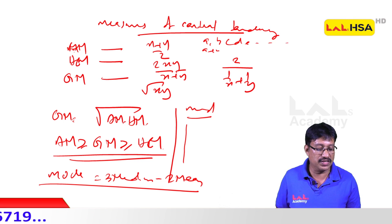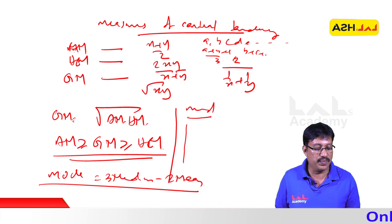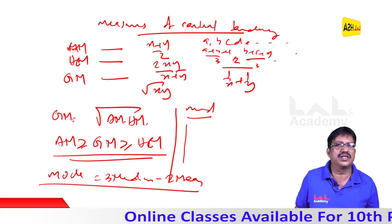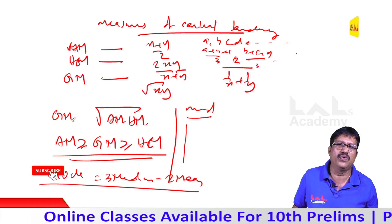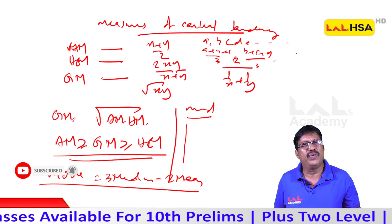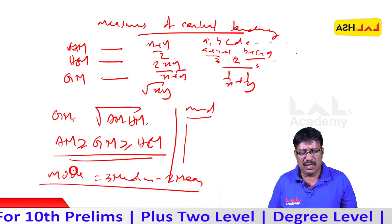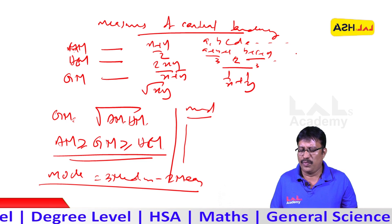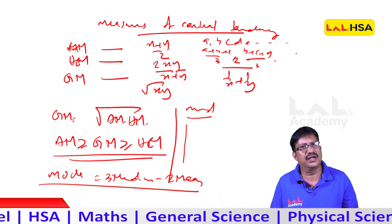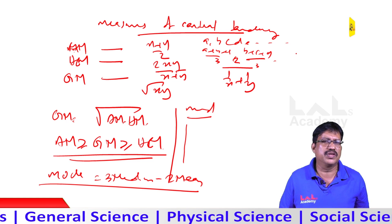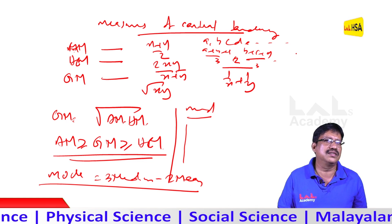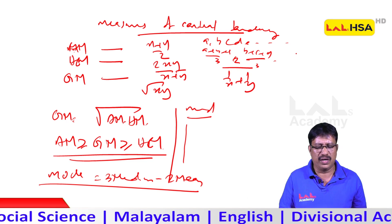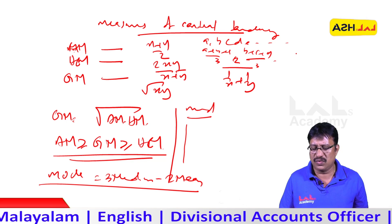The moving average formula: A plus B plus C divided by 3, then B plus C plus D divided by 3, and so on. We also have a progressive average, a combined average, and a composite average.